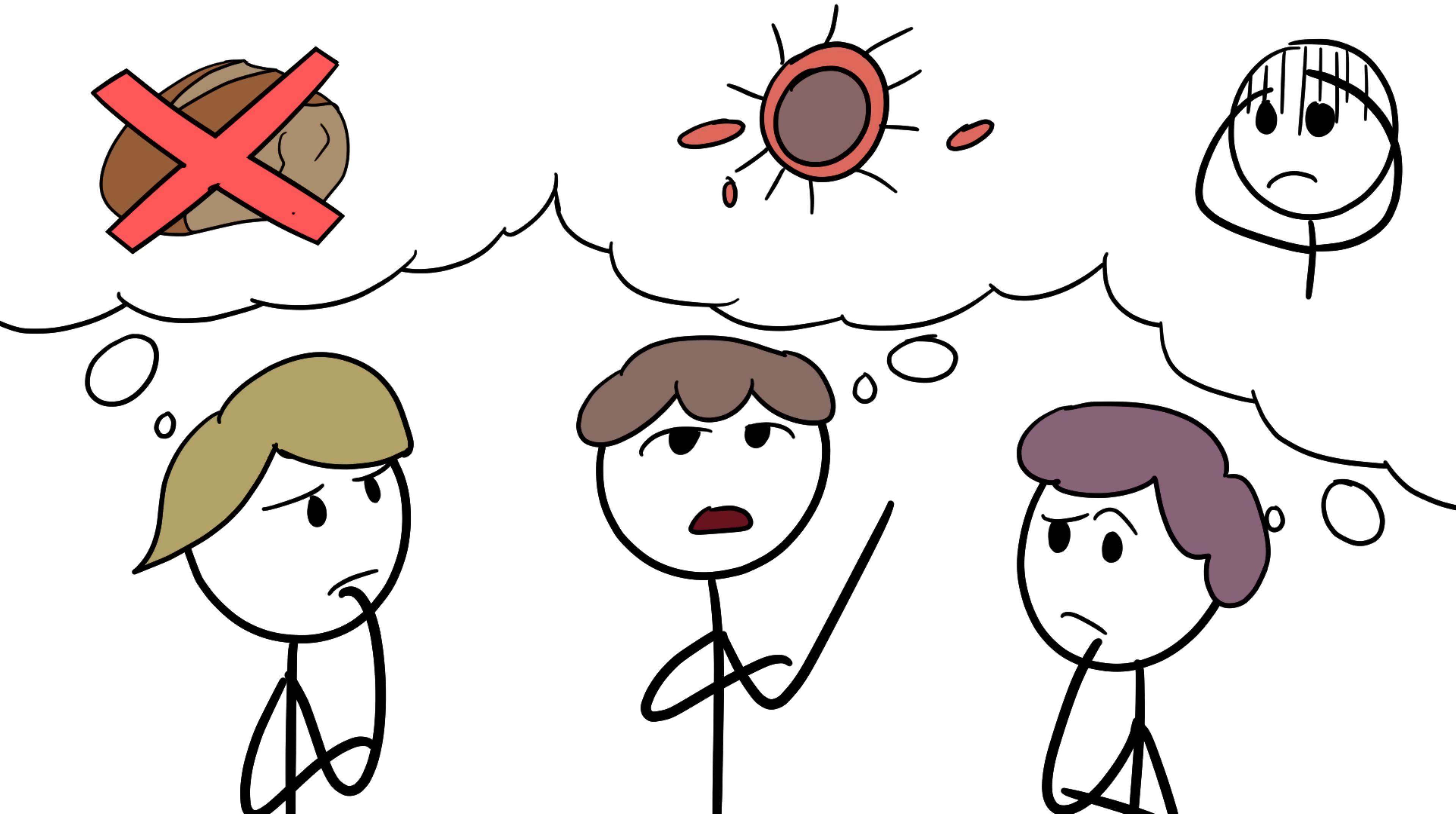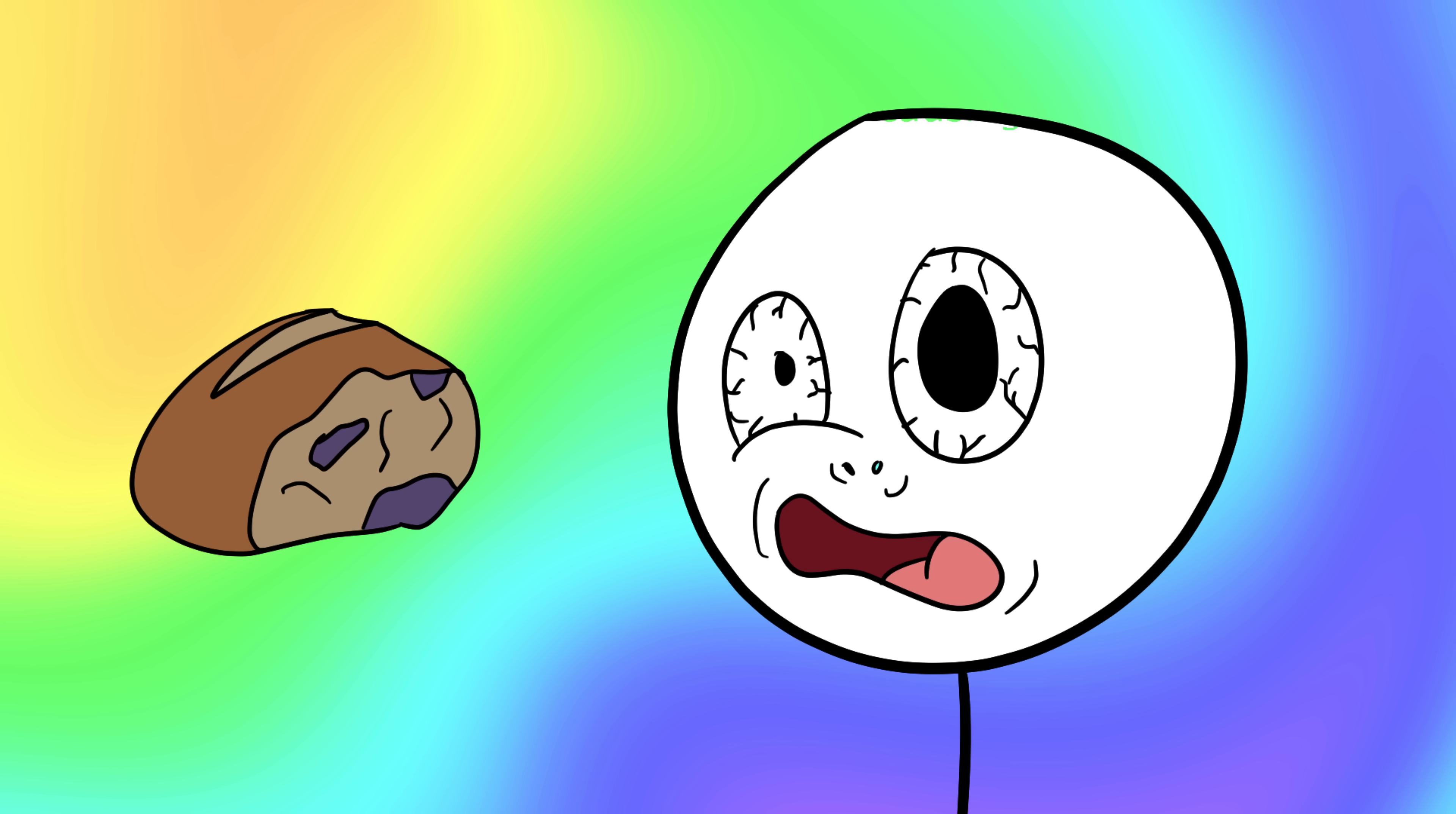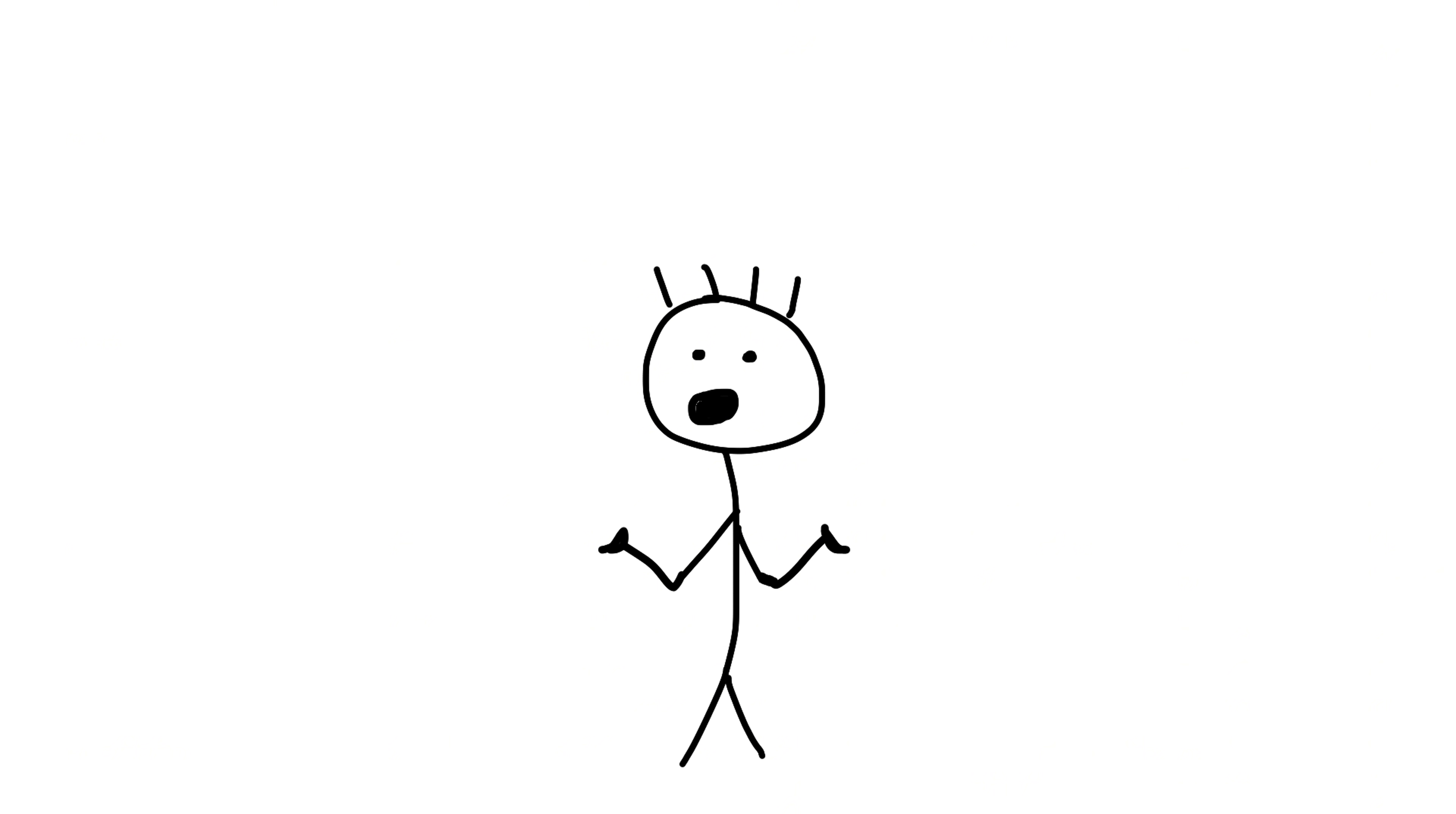Historians today still don't have a clear answer. Some think it was mass hysteria brought on by stress, famine, and disease. Others suggest it was ergot poisoning, a mold on rye bread that produces hallucinogens similar to LSD. But neither explanation fully accounts for the sheer scale and duration of the outbreak.